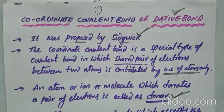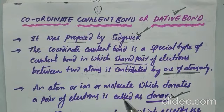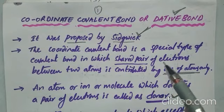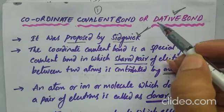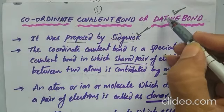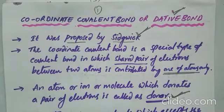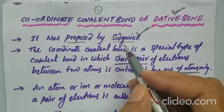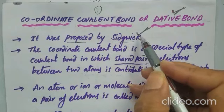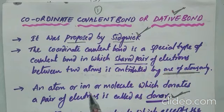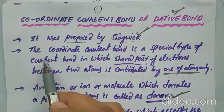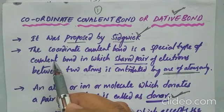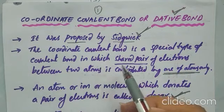Hi students, now we are going to discuss one of the important concepts: coordinate covalent bond. This bond is also called dative bond. Coordinate covalent bond was proposed by Sedgwick.